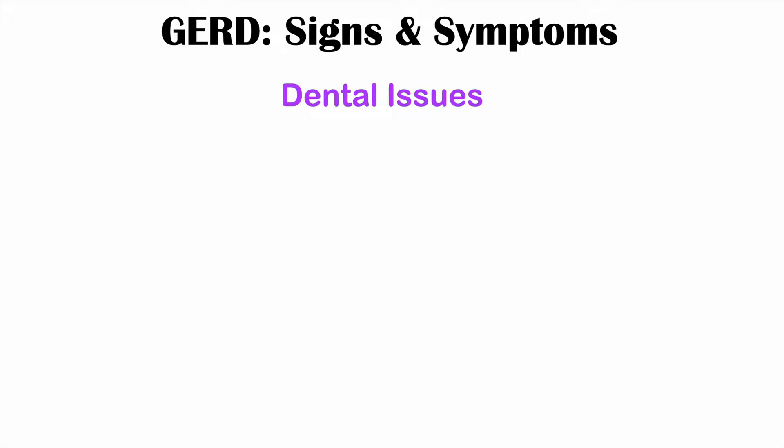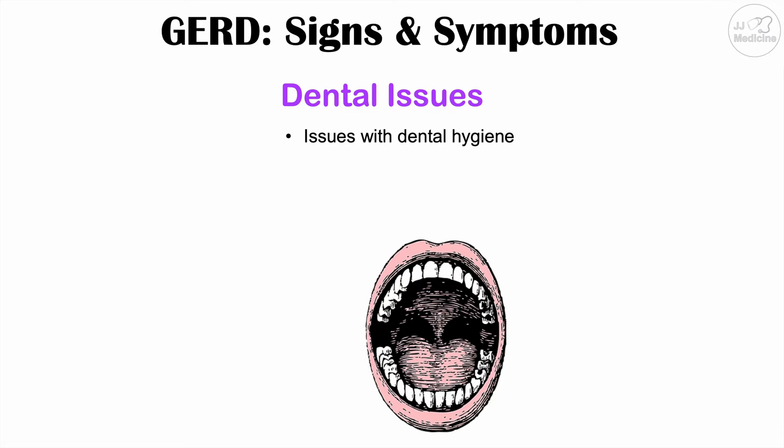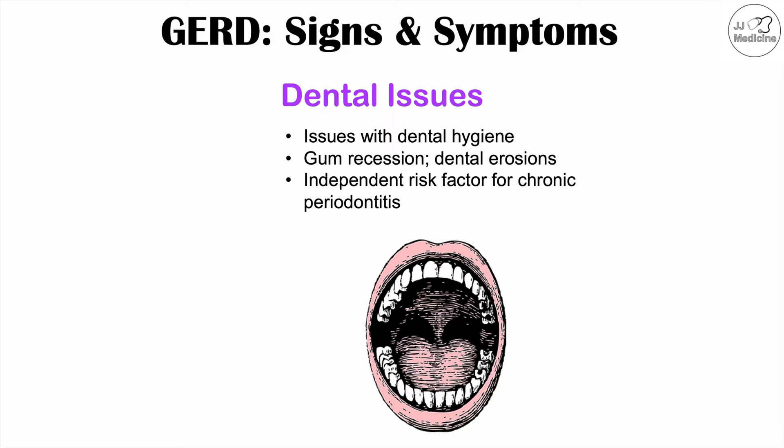Dental issues are another important sign of GERD that is oftentimes overlooked. Individuals with GERD can have issues with dental hygiene, gum recession, and an increased risk of dental erosions. Uncontrolled gastroesophageal reflux disease is an independent risk factor for chronic periodontitis, so dental health is an important consideration for these patients.